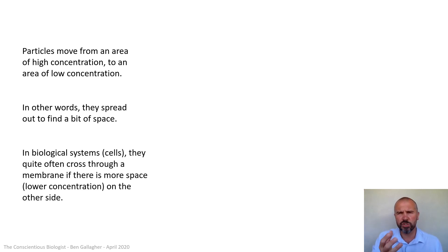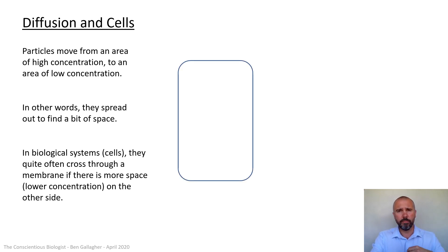Now in biological systems, which are just cells, that's what we're talking about. Particles will quite often cross through a membrane, if there's more space on one side than the other side, if there's a high concentration outside the cell, they might move through the membrane to get to the low concentration inside the cell. So let's really focus now on diffusion and cells and put what I've just said into a diagram here for you. So if I've got a cell, and if I put a load of particles outside the cell, you can see that outside the cell, they are at a high concentration. Inside the cell in the cytoplasm, they are at a low concentration. So it should be very obvious to you that they're going to move from outside the cell to inside the cell, because that's how they can spread out best.